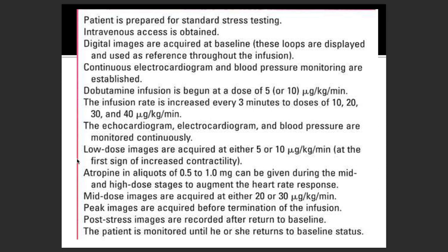Dobutamine infusion should be started at a minimum of 5 or at most 10 micrograms per kg per minute and increased gradually every three minutes: 5, 10, 20, 30, 40. You keep measuring the echocardiogram, ECG, and blood pressure throughout. Images are acquired at 5 or 10 micrograms per kg per minute — the first sign of increased contractility. Atropine ampules should be kept on standby in case the target heart rate is not achieved.